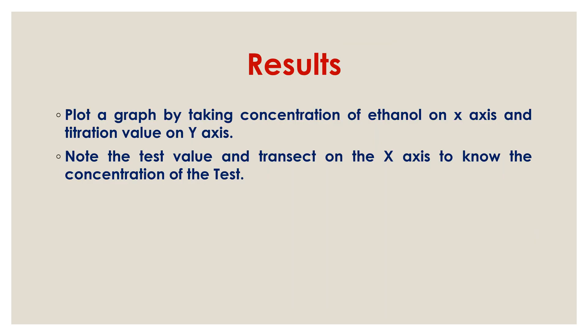Now we need to interpret the results. Take graph paper and plot a graph with ethanol concentration on the x-axis and titration value on the y-axis. Note the test sample's titration value and extrapolate to the x-axis to find its ethanol concentration. This way we can determine how much ethanol is present in a sample — for example, in a wine sample. This is an easy method, and following the experiment correctly will give the correct result. Thank you.